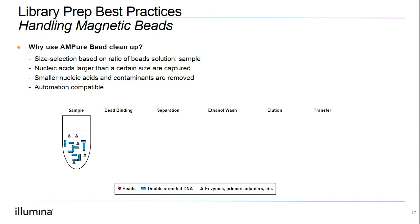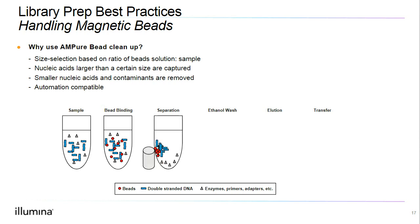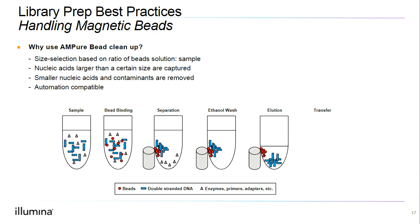Our sample will contain double-stranded DNA, enzymes, adapters, primers, and other reagents. We will add beads which will bind to double-stranded DNA, and based on our bead-to-sample volume ratio, we can retain specific sizes. We then put our tube up to a magnet and the beads along with bound DNA will bind to the magnet, while the enzymes and everything else will be left behind in solution. We will then remove the supernatant, perform an ethanol wash, and elute the double-stranded DNA from the beads, leaving the beads stuck to the magnet, then transfer the sample to the next step.